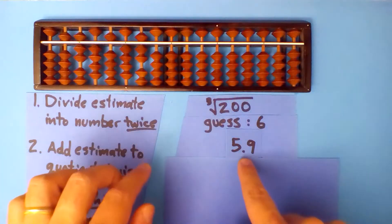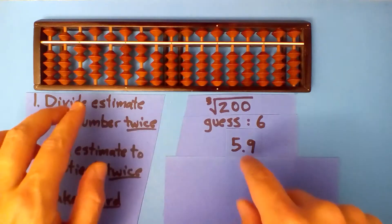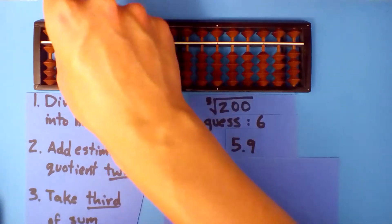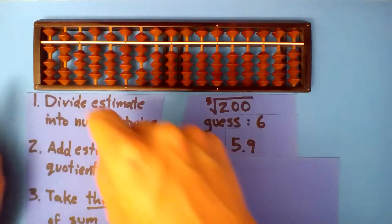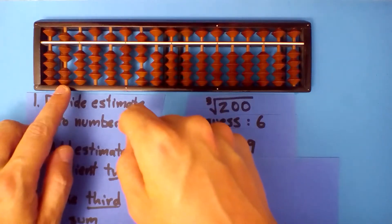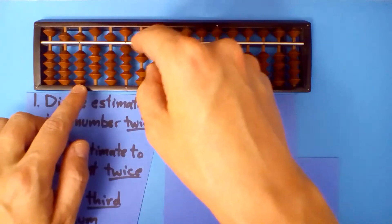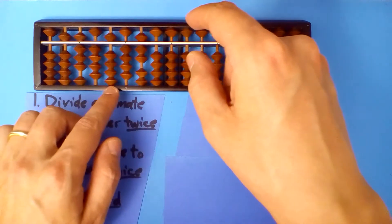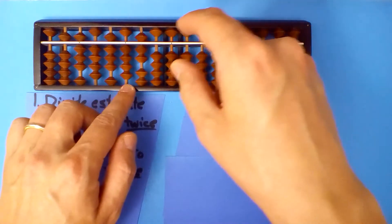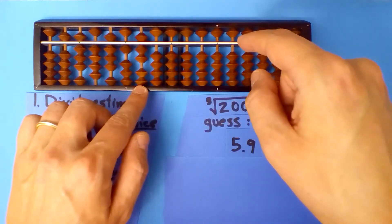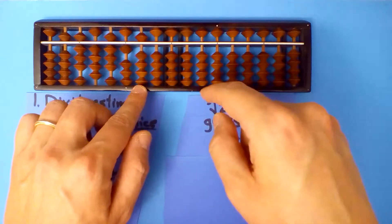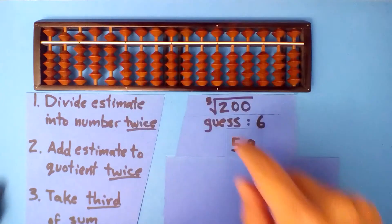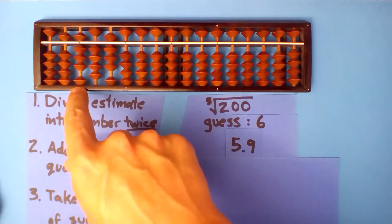I'm going to add our estimate twice: 5.9 and again 5.9, then divide by 3. A third of 1 is 0. A third of 17 is 5. A third of 25 is 8. A third of 14 is 4. A third of 25 is 8. A third of 4 is 1. A third of 17 is 5. A third of 25 is 8. The second time through we'll only need 4 digits, so I'll get rid of these. Our improvement is 5.848.